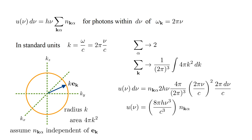For our spherical shell, this becomes N-k-alpha times two-h-nu times four-pi over two-pi-cubed times two-pi-nu over c squared times two-pi d-nu over c. Cancelling common factors and dropping the d-nu, we arrive at U of nu equals eight-pi-h-nu-cubed over c-cubed times N-k-alpha. So we see that U of nu over N-k-alpha, which is A-two-one over B-one-two in Einstein's theory, is eight-pi-h-nu-cubed over c-cubed. Therefore the prediction of quantum field theory agrees with Einstein's 1917 result.